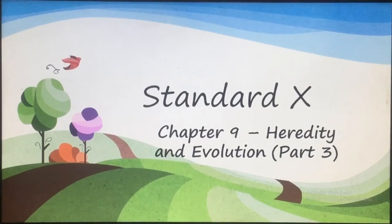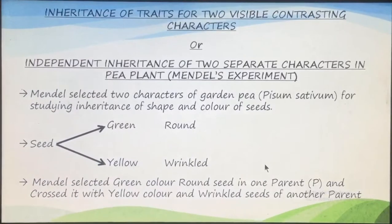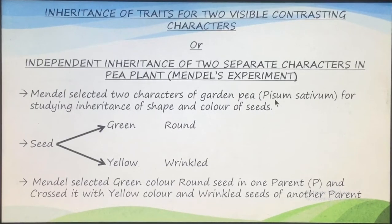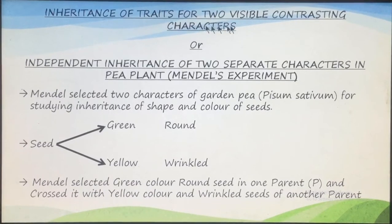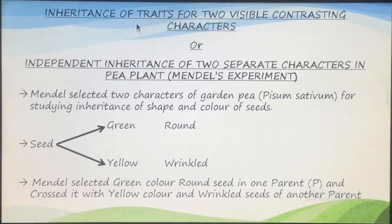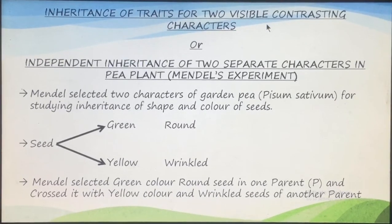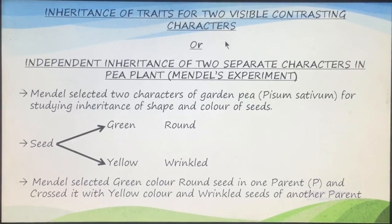Hello students, we'll continue with Chapter 9, that is Heredity and Evolution. Last time we discussed about Mendel's monohybrid cross, where he had taken only one trait. Today we'll be talking about where Mendel took two traits — two visible contrasting characters. He wanted to know whether the inheritance of two traits is independent of each other or there is some connection. This is known as a dihybrid cross.